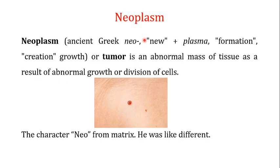When you talk about tumors — whether benign or malignant — for abnormal cell division we use the term neoplasm. Neoplasm is made up of two words: 'neo,' which refers to new, and 'plasm,' which refers to formation, creation, or growth. So neoplasm, or tumor, is an abnormal mass of tissue as a result of abnormal growth or division of cells.